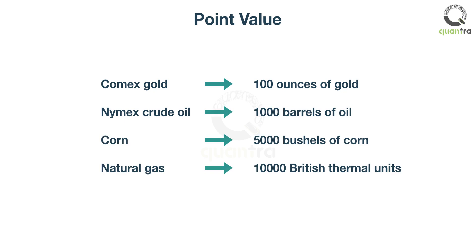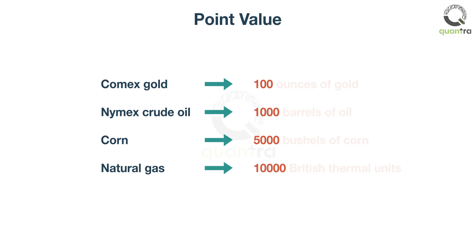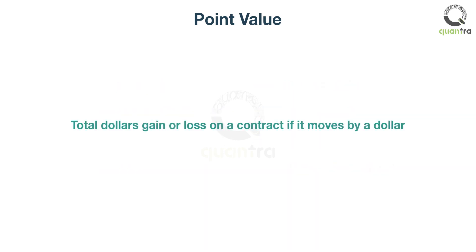Sounds confusing? Well, you do not actually have to know what a bushel or a British thermal unit is. The units in question really do not matter to you as a speculator, but the numbers themselves do. The number tells you how many dollars you will gain or lose on a contract if it moves by one dollar.